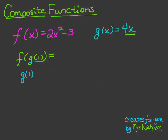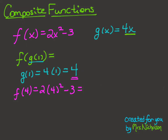So let's start out by finding g of 1. I'm just going to substitute 1 in for x, and we get 4 times 1 is equal to 4. So now 4 is going to become the input into the function f. f of 4 is equal to 2 times 4 squared minus 3. Remember that we're going to square the 4 first — 4 squared is 16, times 2 would be 32, minus 3 gives us an answer of 29. That becomes my answer, or the output, for the composite function f of g of 1.